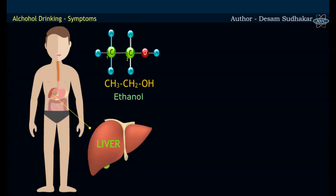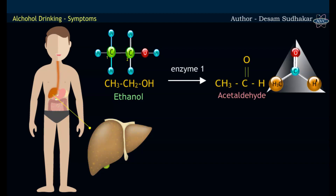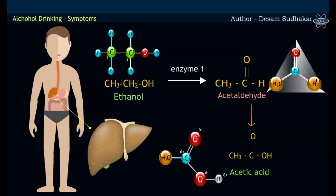When ethanol reaches the liver, the enzymes convert ethanol to acetaldehyde, which is further converted into acetic acid.